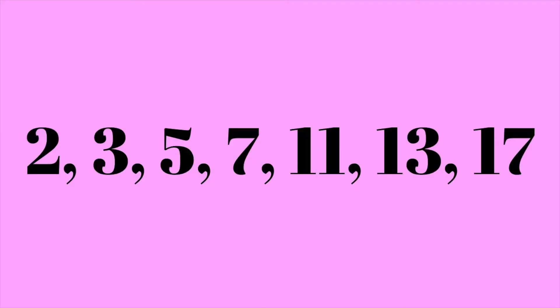The only numbers you really need to test are less than 20, because on the GRE you're not going to get anything too complicated. The GRE is about testing whether you understand the theory far more than plugging numbers into a formula or calculator. The set of numbers you definitely want to try are 2, 3, 5, 7, 11, 13, and 17, and if a number isn't divisible by any of those it's probably safe to say it's prime.